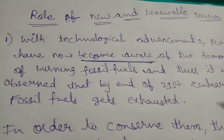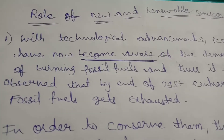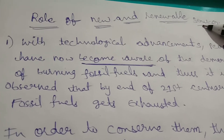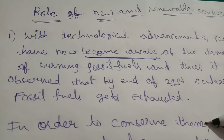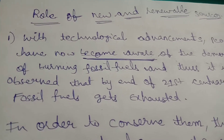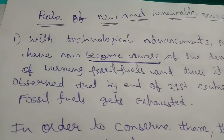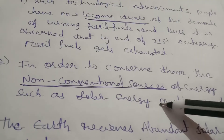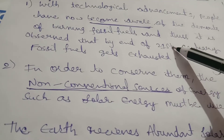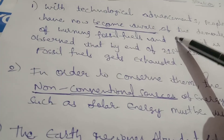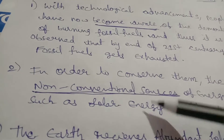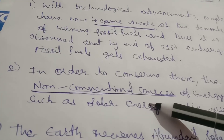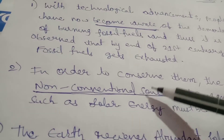Fossil fuels are costly. If we use fossil fuels, we can also use renewable sources like solar energy. We use non-conventional sources of energy because they are pollution-free. Non-conventional sources include solar energy, wind energy, tidal energy, and geothermal energy.